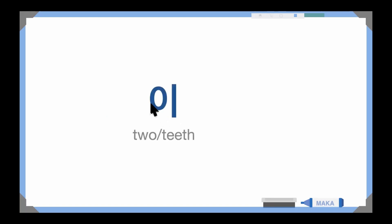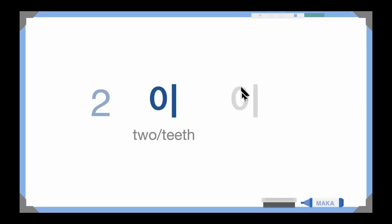And next one — this is 'e', 'e'. It means number two, and also it means 'teeth' — so it has two different meanings. Let's write 'e': make a circle on the left first, then the vowel on the right side — 'e', 'e', 'e'.